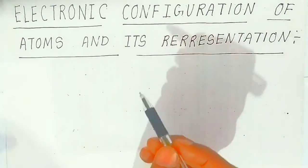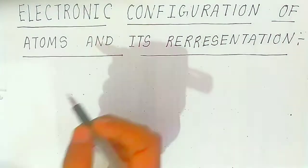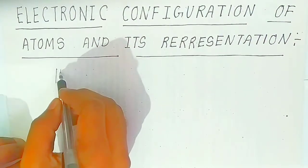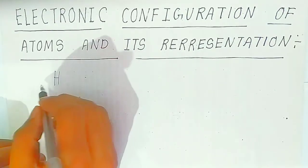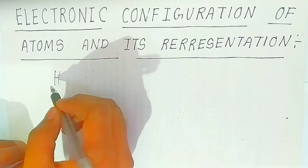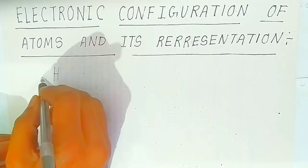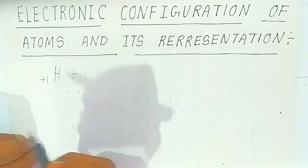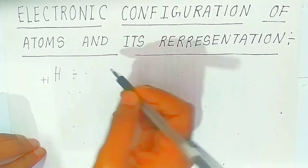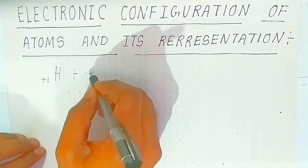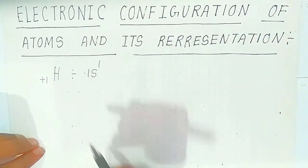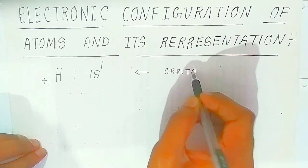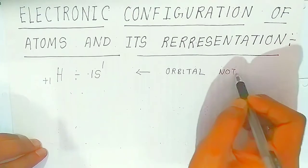We are going to study the electronic configuration of some atoms and their representation. To write the electronic configuration of atoms, the first and smallest atom in the periodic table is hydrogen. To write the electronic configuration of hydrogen, you should know its atomic number — the number of protons is one, which equals the atomic number. Since hydrogen has only one electron, it will go to the first orbit: 1s1. This is called orbital notation.